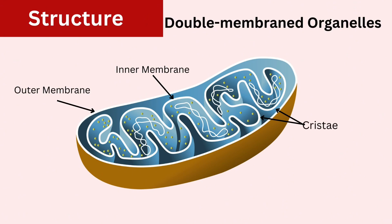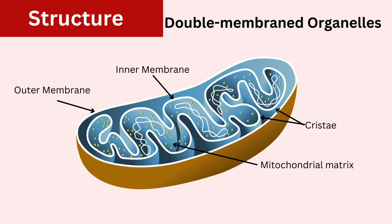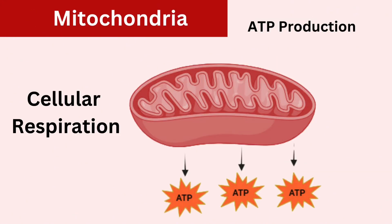Mitochondria are double membrane organelles with an inner and outer membrane. The inner membrane is highly folded into structures called cristae, which increases its surface area and houses the machinery for ATP production. The space enclosed by the inner membrane is called the mitochondrial matrix.